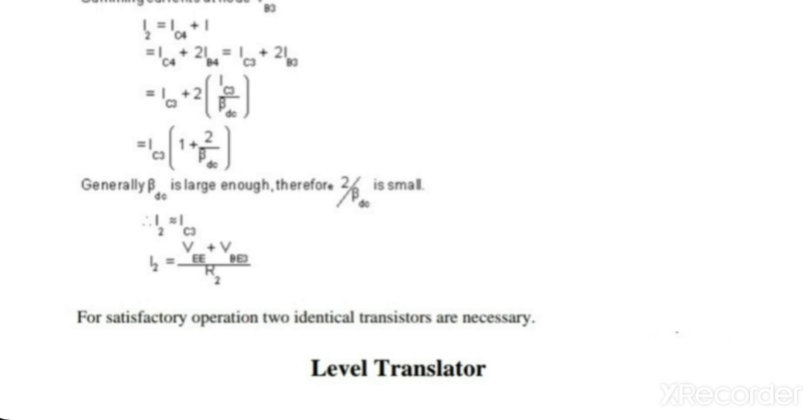The current I2 can be obtained by writing the Kirchhoff's voltage equation for the base emitter loop of the transistor Q3, and I2 is obtained as Vee minus Vbe3 divided by R2.